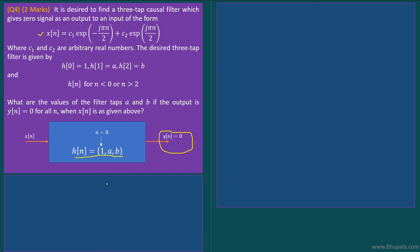Looking at the given x[n], we can rewrite it as c1·(−j)^n + c2·(j)^n, because e^(−jπn/2) = (−j)^n and e^(jπn/2) = (j)^n.